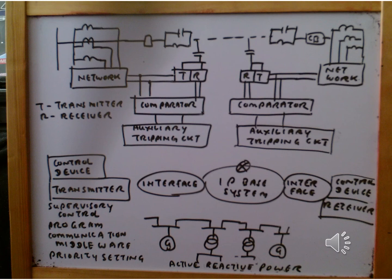The IP-based system is an interface with the interface software and middleware, combined with the transmitter. The transmitter is also equipped with control devices and basically control program, communication middleware, and priority settings. This is what we use as an internet system. Those electronic devices provide the appropriate control function to control the active and reactive power flow in the system.